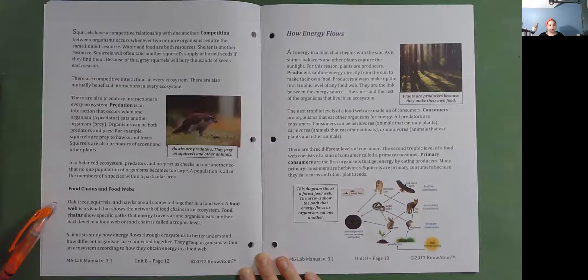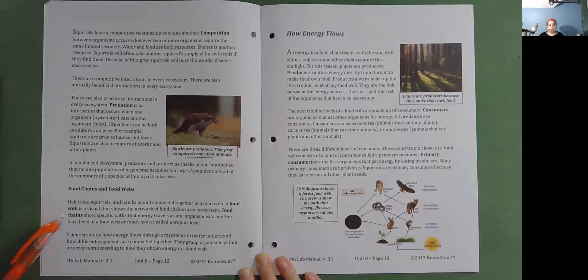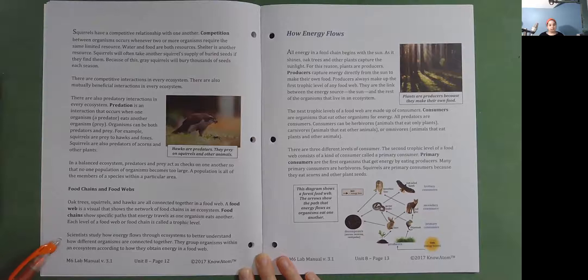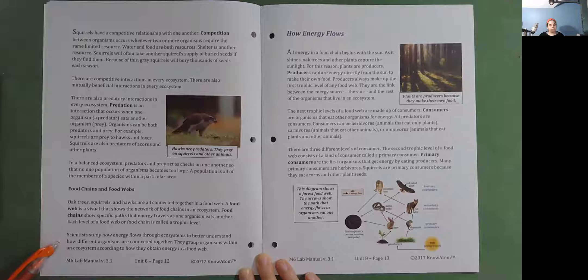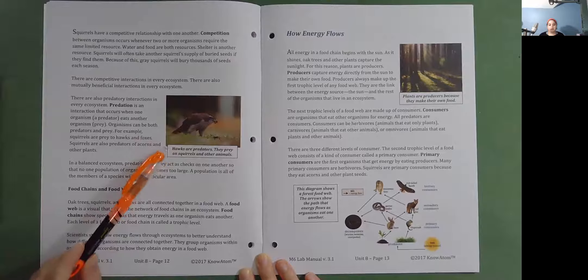Food chains and food webs. Oak trees, squirrels, and hawks are all connected together in a food web. A food web is a visual that shows the network of food chains in an ecosystem. Food chains show specific paths that energy travels as one organism eats another. Each level of a food web or food chain is called a trophic level. Scientists study how energy flows through ecosystems to better understand how different organisms are connected together. They group organisms within an ecosystem according to how they obtain energy in a food web. Hawks are predators. They prey on squirrels and other animals.